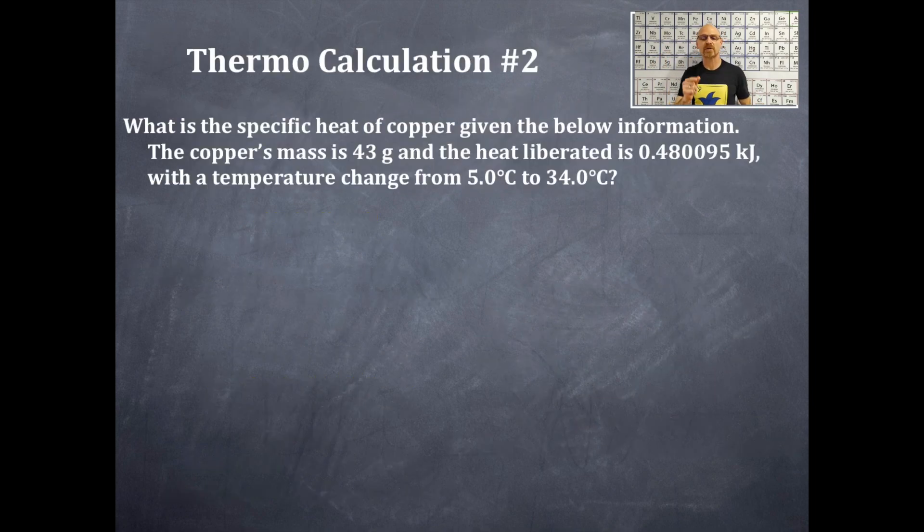Today we are talking about thermochemistry calculation number two. It says, what is the specific heat of copper given the below information? The copper's mass is 43 grams and the heat liberated is 0.480095 kilojoules with a temperature change from 5.0 degrees Celsius to 34.0 degrees Celsius.